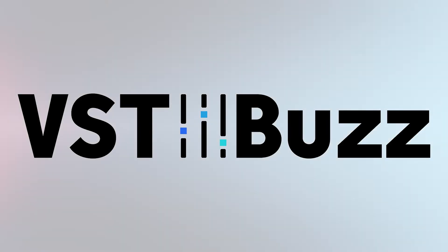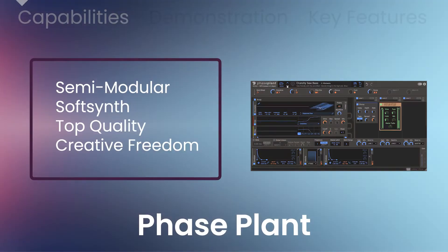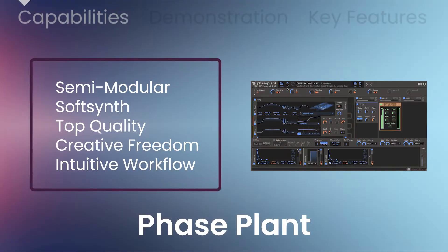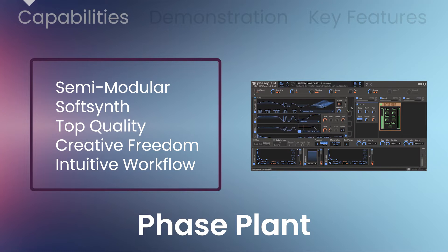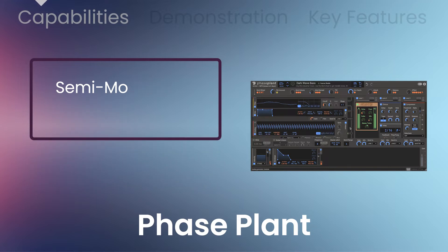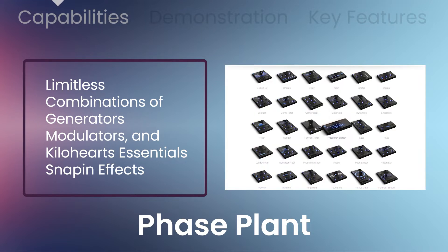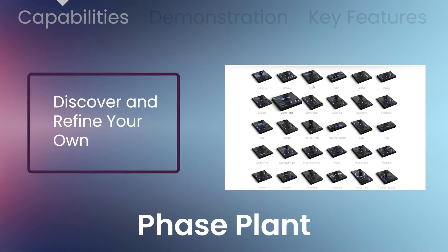VST Buzz presents 50% off Phase Plant by Kilohertz, a multi-award-winning semi-modular soft synth with a unique combination of top-quality processing, creative freedom, and an intuitive workflow. You'll be creating amazing patches in no time as you explore limitless combinations of generators, modulators, and effects to discover and refine your own original sound.